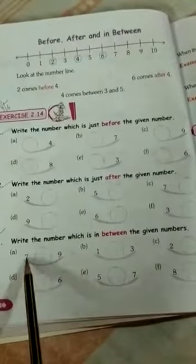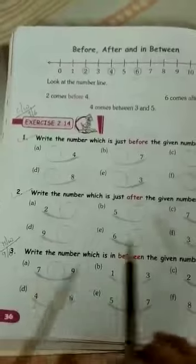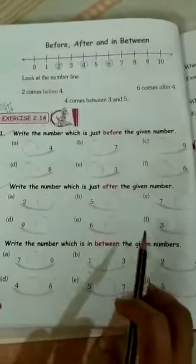You will write 7, 8, 9. Like this, you will complete your homework and you will send me. You will write your name here in class work.